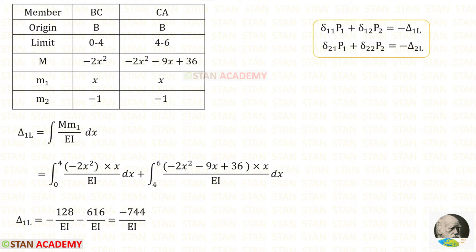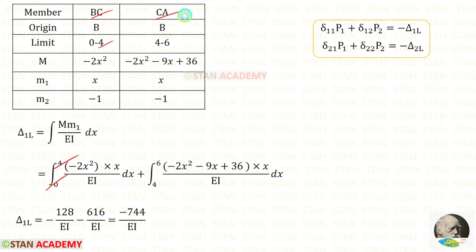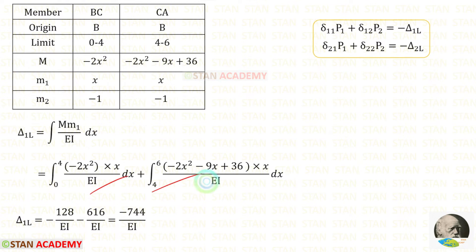Now we are going to find delta 1L. The formula is the integration of M·M1 divided by EI dx. Since there are two sections, we split the formula into two parts: for BC the limit is 0 to 4 and for CA the limit is 4 to 6. After applying the values of M and M1 and computing both integrations using a calculator, when we add the two results we get minus 744 divided by EI.